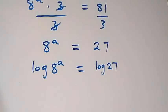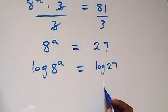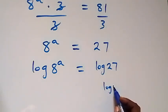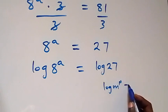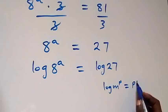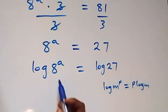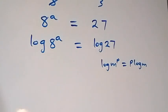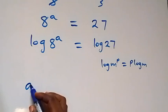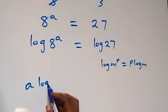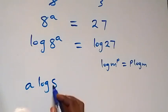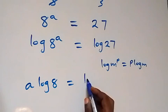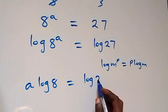Applying the power law of logarithm — from log m raised to power p, which can be written as p log m — here a can come to the front, then this becomes a log 8 equals log 27.